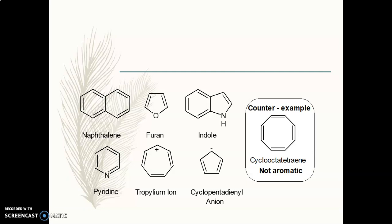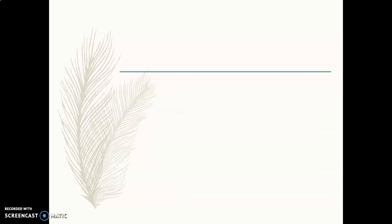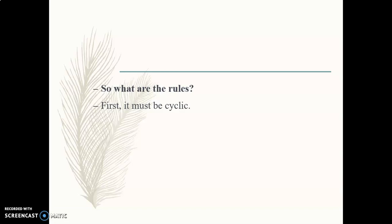We are going to see these rules. The first rule is the compound must be cyclic. In the previous slide you have seen that all the compounds were cyclic. Cyclopentadiene is also a cyclic compound, but still it is not aromatic, meaning the first rule alone is not sufficient. A compound must satisfy all four rules; only if it satisfies all four rules is that particular compound considered as aromatic.